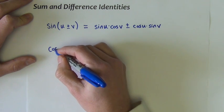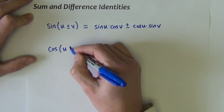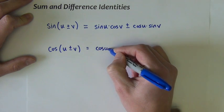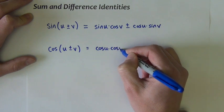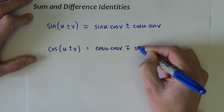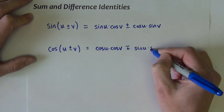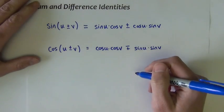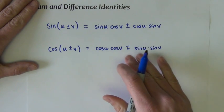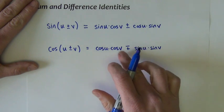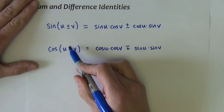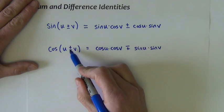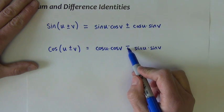The next one we have is for cosine. Cosine of u plus or minus v is equivalent to cosine u times cosine v minus plus sine u times sine v. So with cosine, each of the terms are both cosines, both sines. Notice the signs in the middle are different. If we are adding here on the left, we actually subtract. And if we are subtracting here on the left, we're actually going to expand with addition.